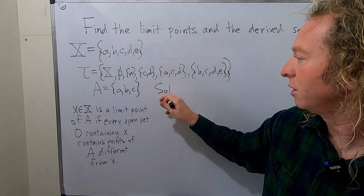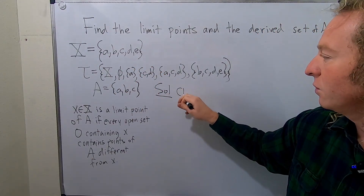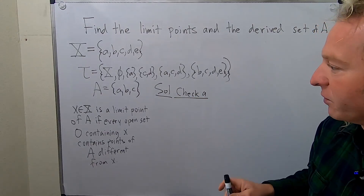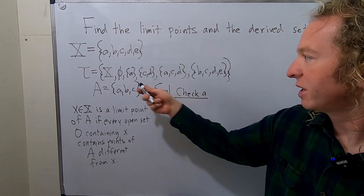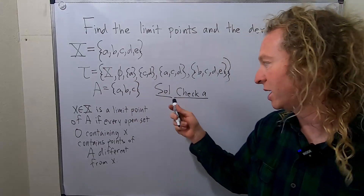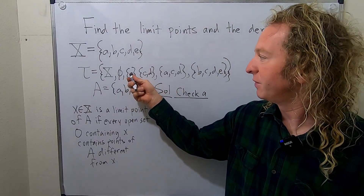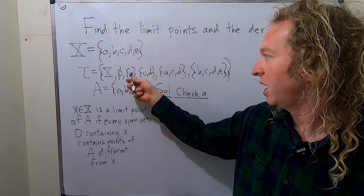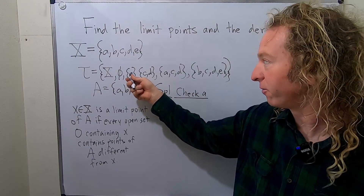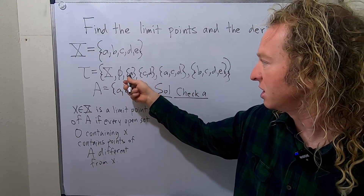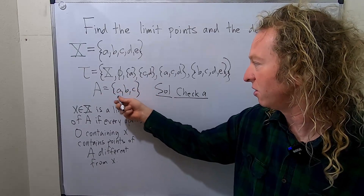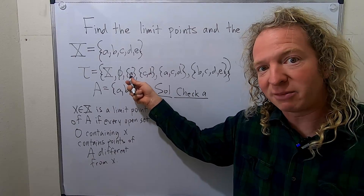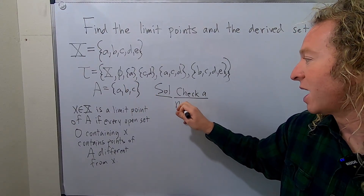Solution. We'll start by checking little a. To see if a is a limit point, we use this definition and look at every open set containing a. Here is an open set containing a — does it contain points of A different from little a? No, it doesn't. Little a is the only element it contains, so a is not a limit point.